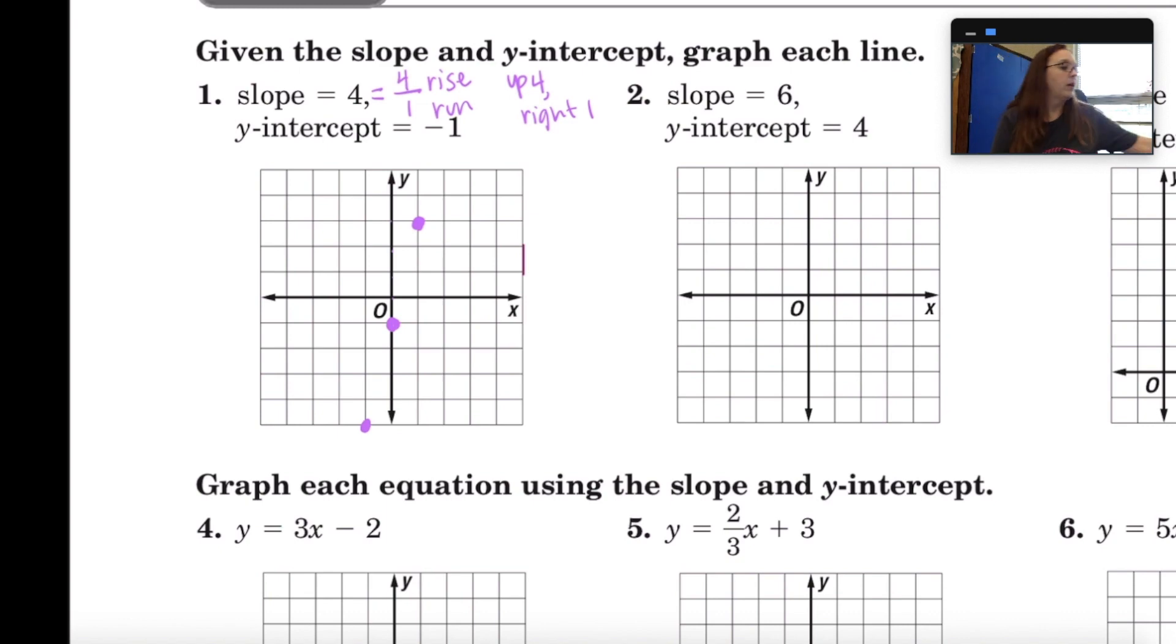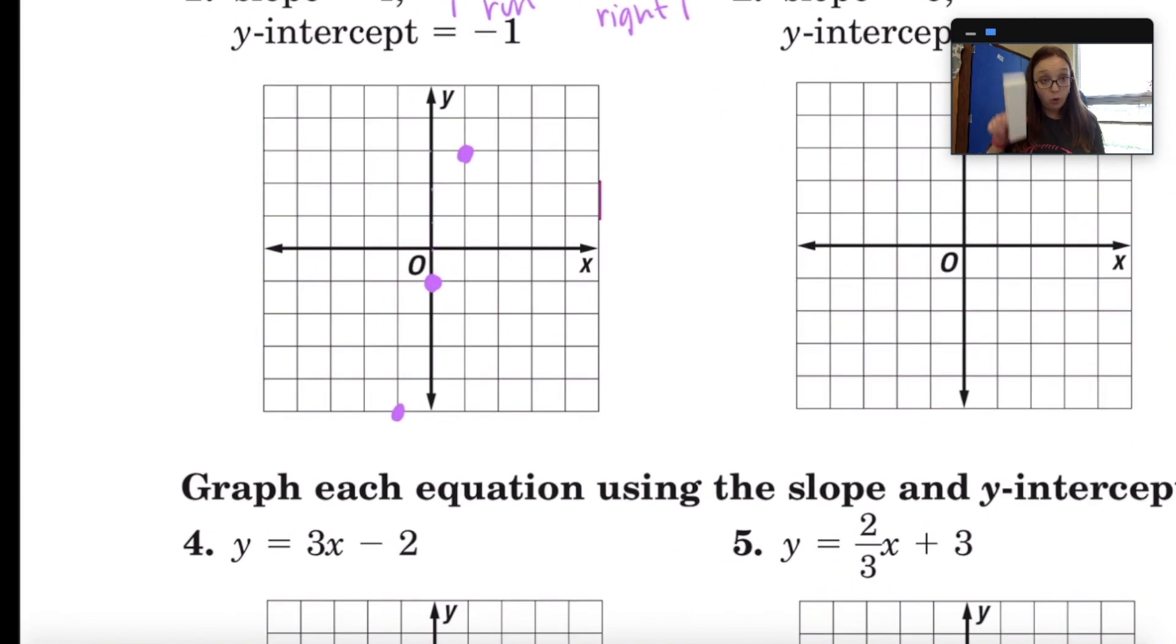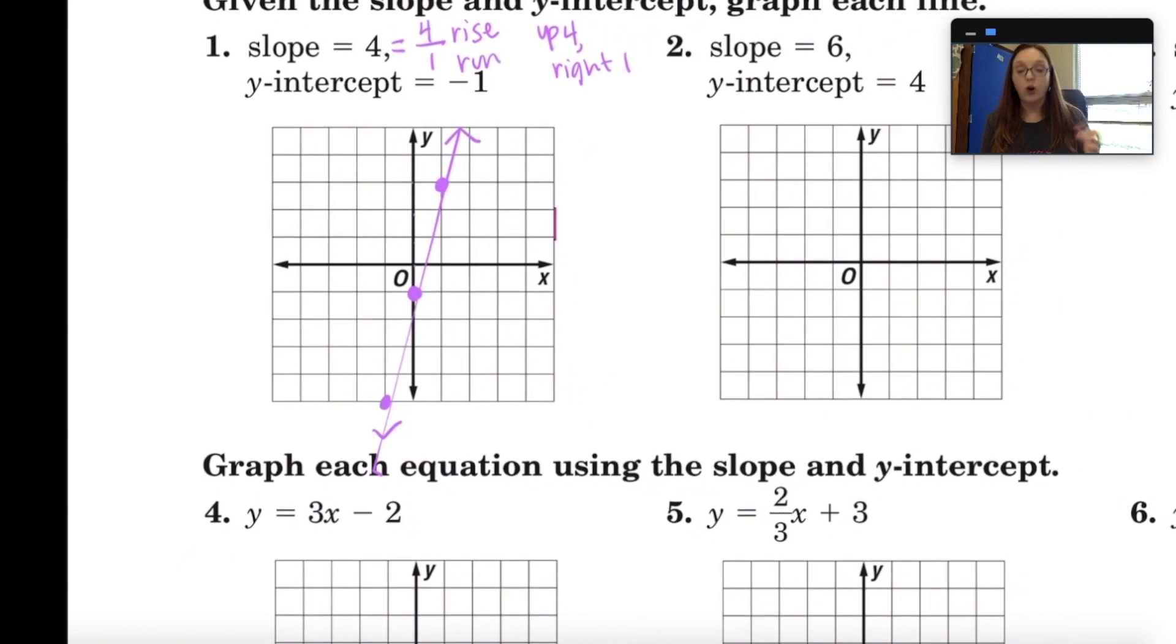Okay, now you want to take a ruler if you have one. I have my pencil box right here that I'm going to use as a ruler. You're going to line up those points that you've just drawn with your ruler. There's my line and we're going to include arrows.